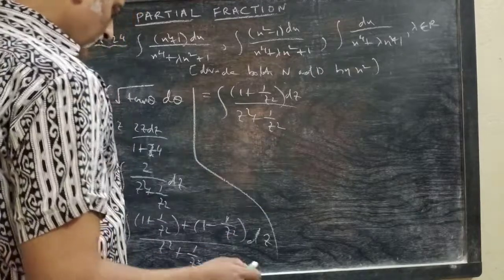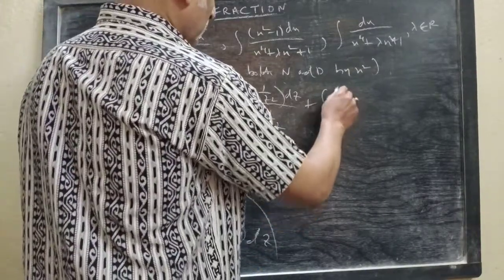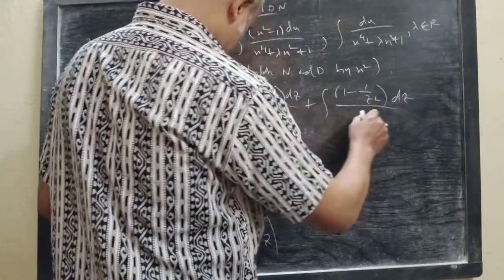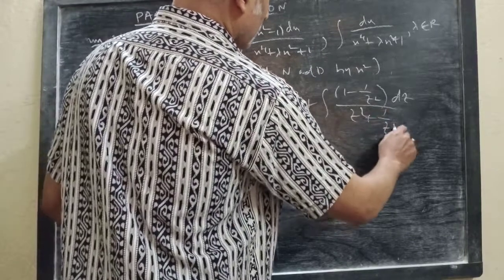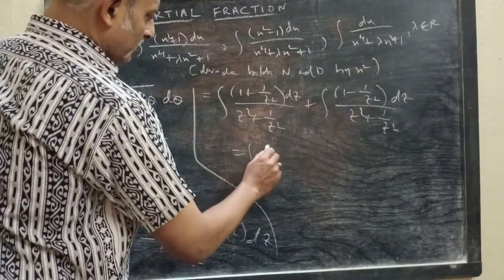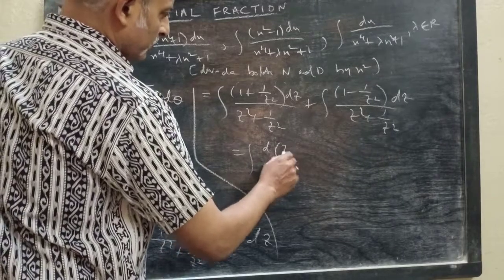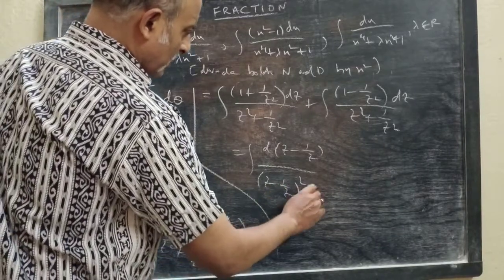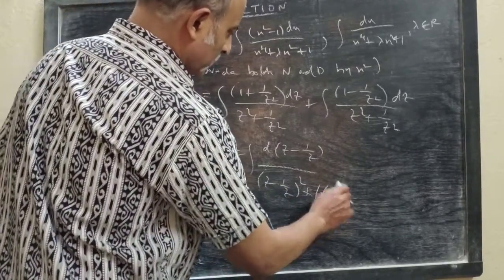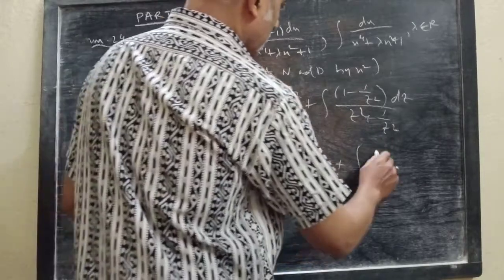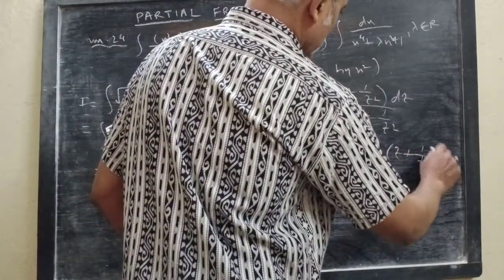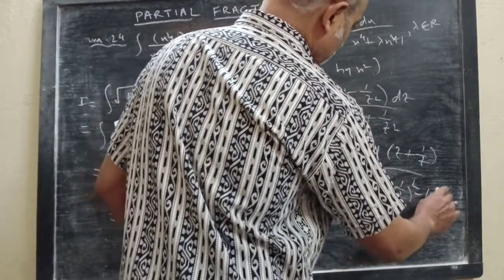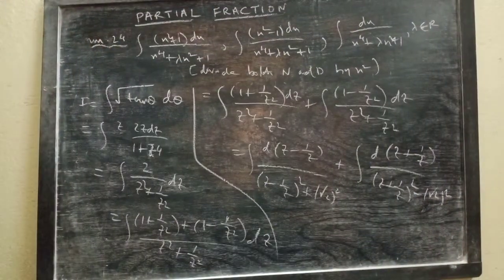So we have z² + 1/z², then (1 − 1/z²) dz by z² + 1/z². Now the numerator of the first part is d(z − 1/z), and here you can write (z − 1/z)² + 2, that is (√2)². And here you can write d(z + 1/z), and here (z + 1/z)² − (√2)².